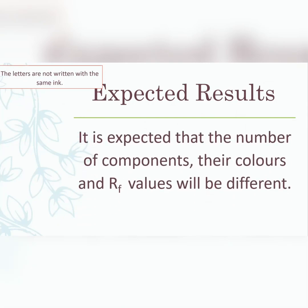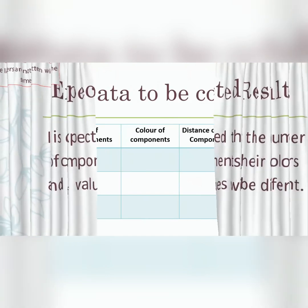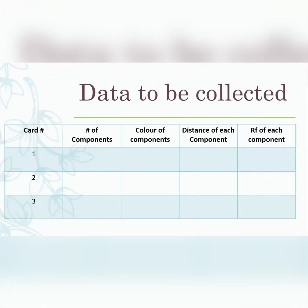For expected results — notice I have a copy of the hypothesis here: the letters are not written with the same ink. Your expected results must match your hypothesis. So it is expected that the number of components, their colors, and RF values — retention factors — will be different across the three inks. That would confirm that the inks are different.